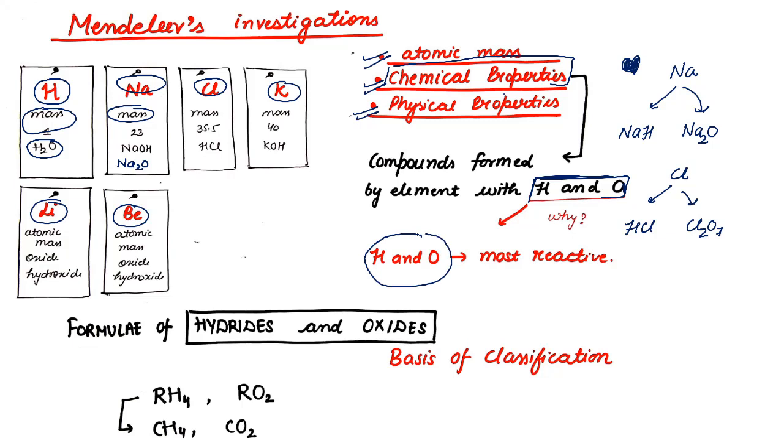The question is why specific priority, why special consideration to hydrogen and oxygen? This is because hydrogen and oxygen were the most reactive elements and they are known to form compound with almost every single element known. The formula of hydrides and oxides I have written here was the basis of the classification of this Mendeleev's periodic table.